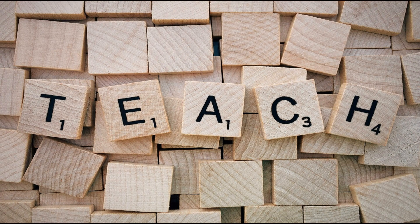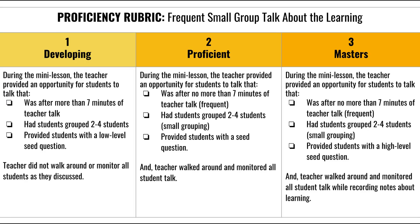Let's start thinking about your 10-minute micro-teach lesson that will implement frequent small group purposeful talk. During the demonstration lab, you'll present a 10-minute mini-lesson in which you model frequent small group talk about the learning. You'll receive feedback based on the proficiency rubric you see on the screen. To earn credit for this course, participants must score at the proficient or master's level.